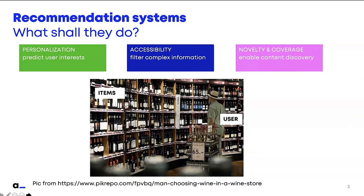So recommendation systems. Let's first think about what recommendation systems shall do. Let's use this example of the picture. You have a wine store with an owner and clients that come in. They ask you like, 'Hey, I really like this wine that you gave me last time — do you have something similar?' Or, 'I'm looking for a wine to recommend for a friend. I would like to try something new.' So the owner of that wine store would help you and give you recommendations that are personalized.